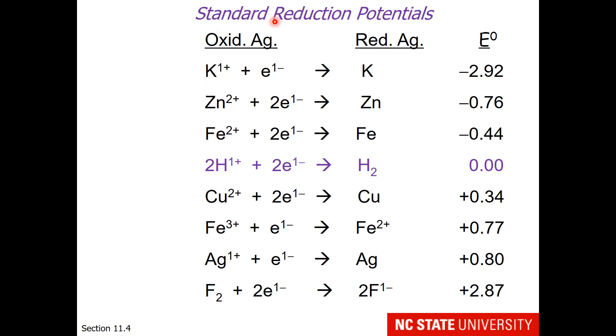So here is a selection of standard reduction potentials from our textbook, and you notice the standard hydrogen electrode is in the middle. Then we have values that are more negative and values that are more positive. Notice that these are standard reduction potentials. So each one of these reactions involves electrons on the reactant side and a material that is going to be reduced by the addition of electrons. Therefore, the oxidizing agents are on the reactant side, and the reducing agents, the ones that now have the electrons, are on the product side.